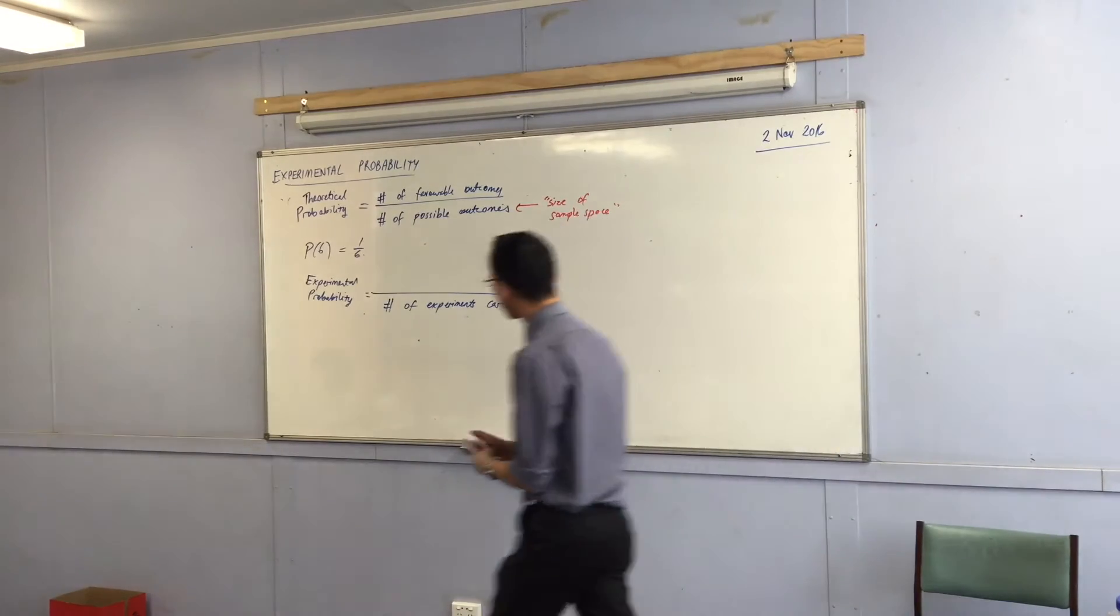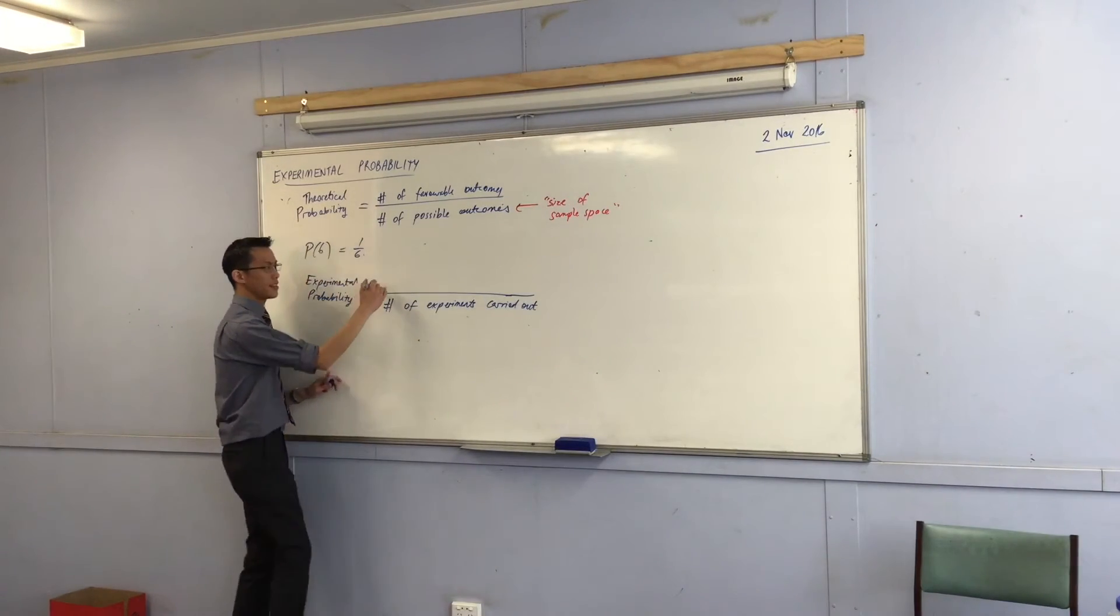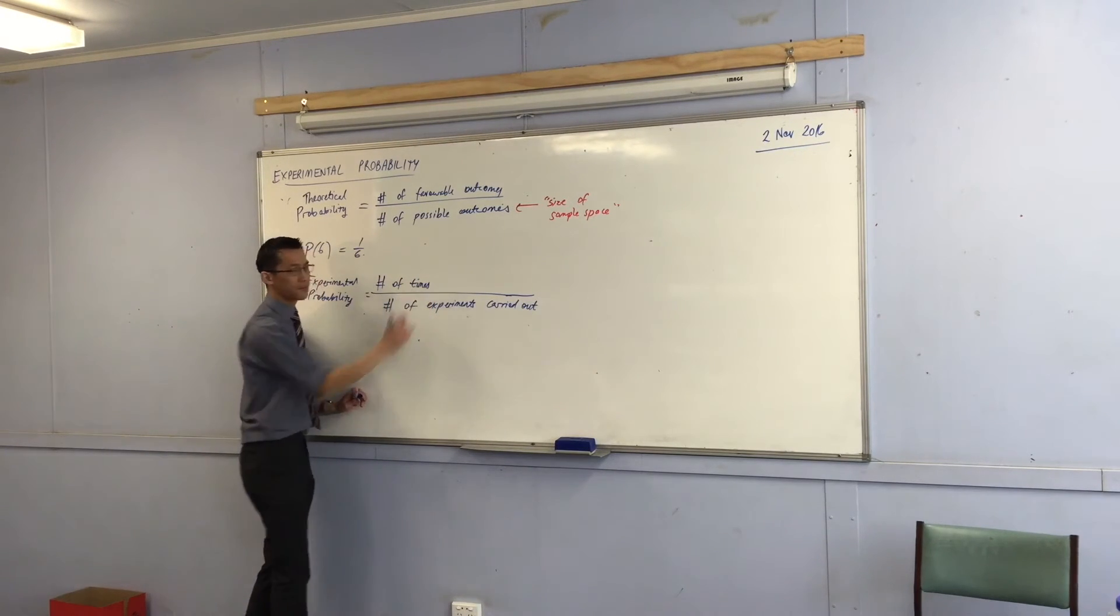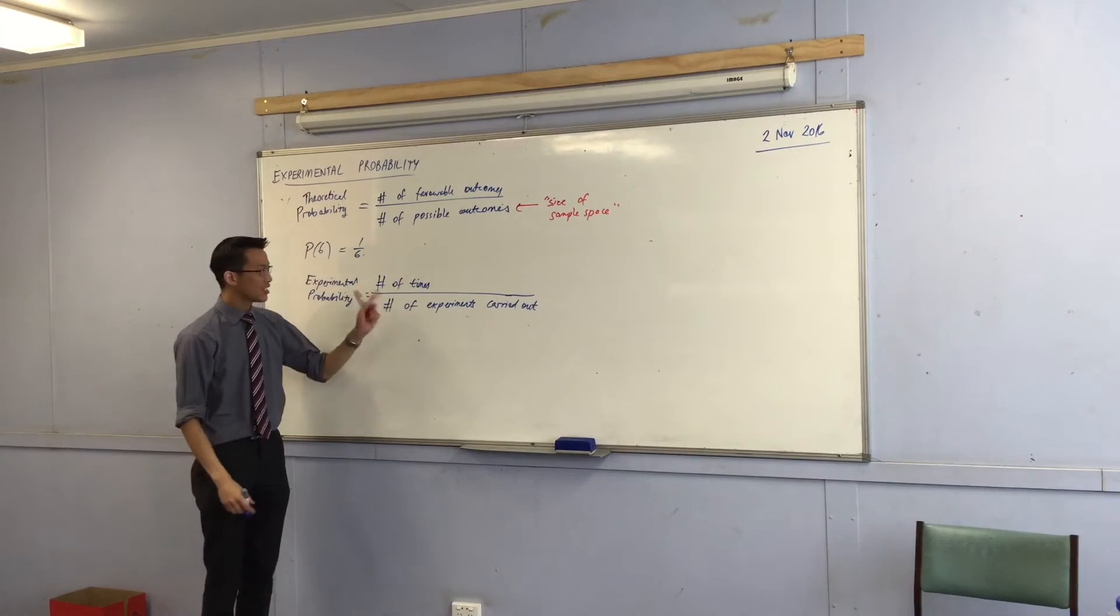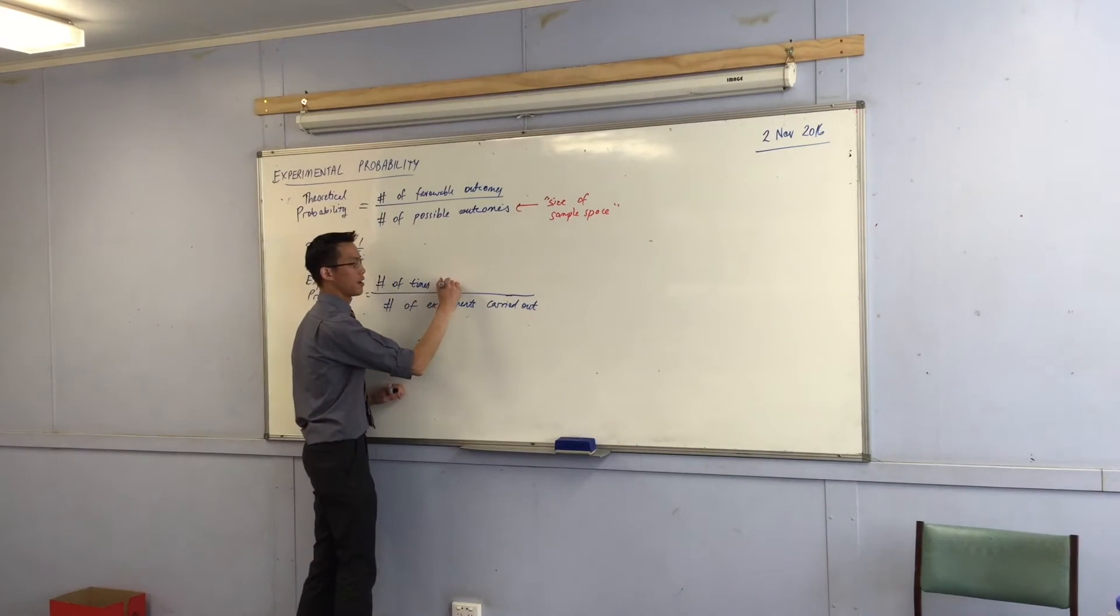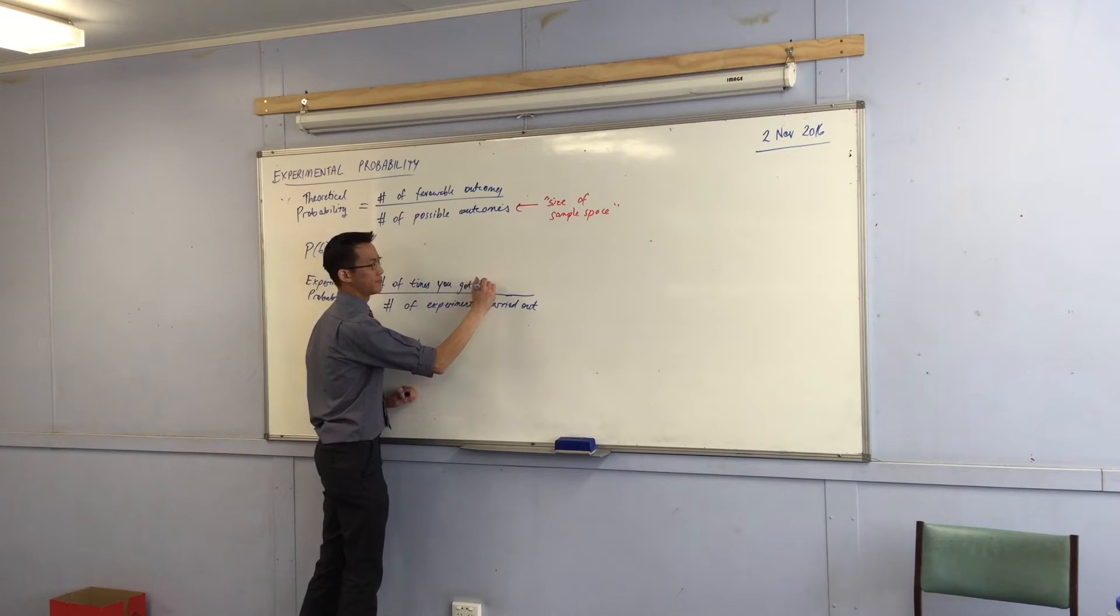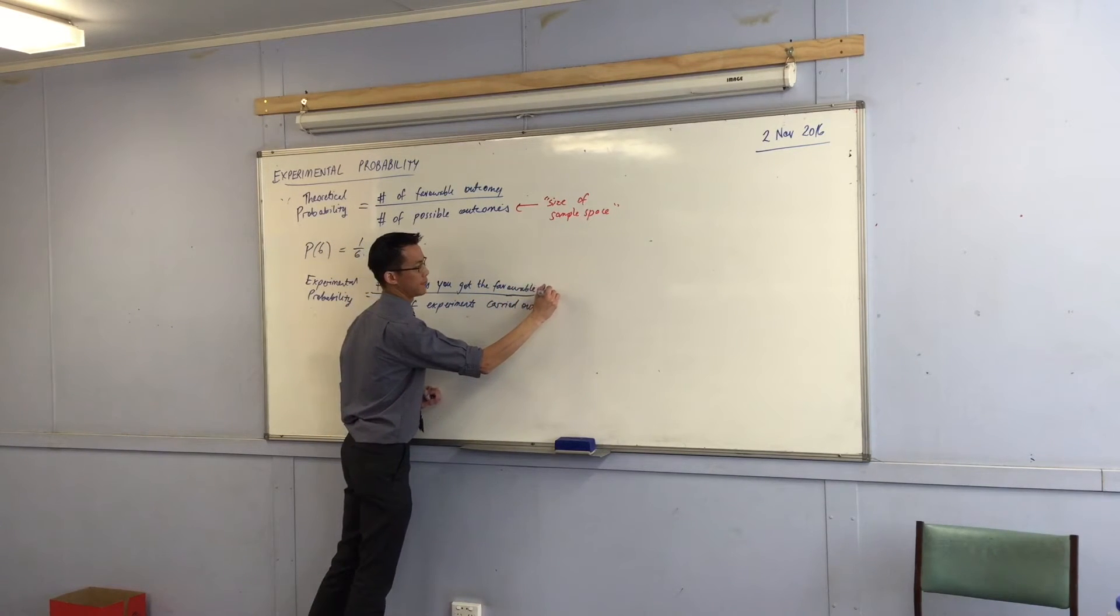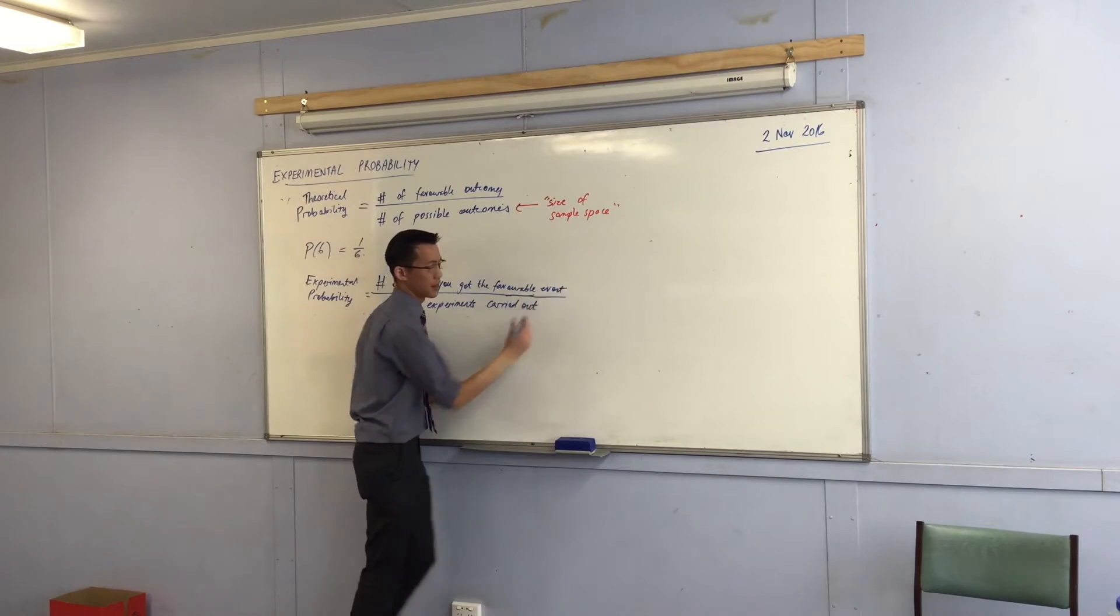And on the top, what we want is number of times you actually got the favorable events, right? The number of times you got the favorable event or outcome. Okay?